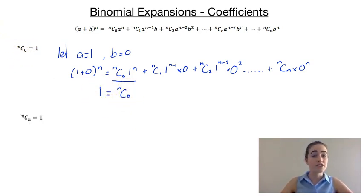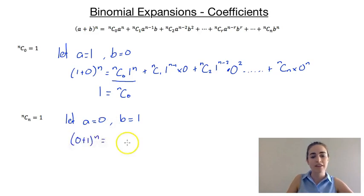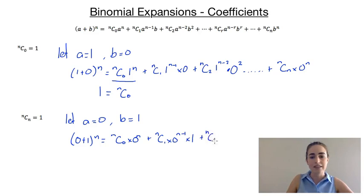We want to prove that our last coefficient is 1 as well, so we're trying to prove that ncn is equal to 1. The proof is going to be incredibly similar, except this time we're going to let a equal 0 and b equal 1. So we're going to end up with 0 plus 1 to the power of n equals nc0 times 0 to the power of n, plus nc1 times 0 to the power of n minus 1 times 1, plus nc2 times 0 to the power of n minus 2 times 1 squared.